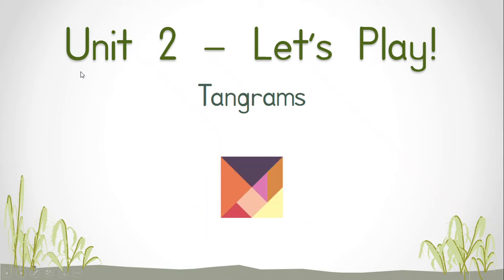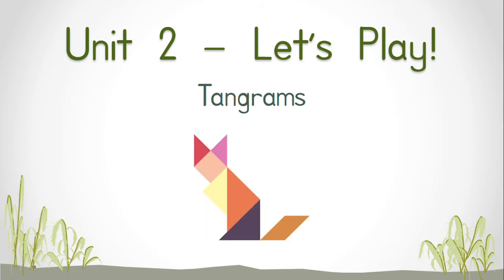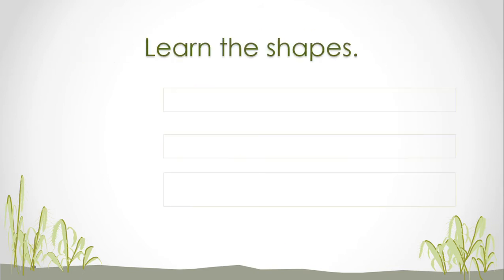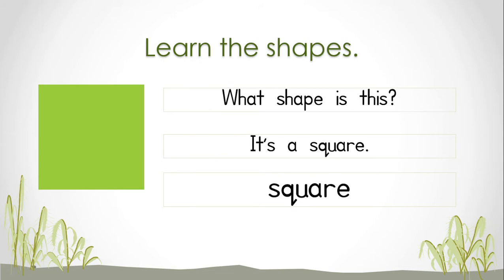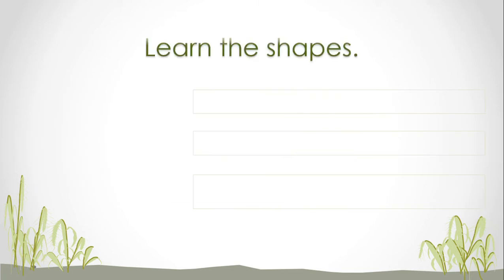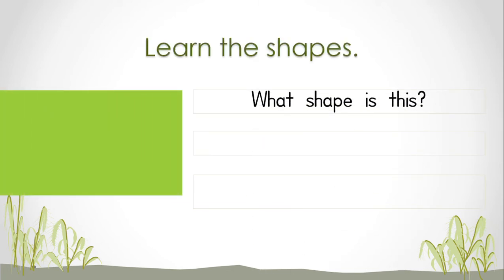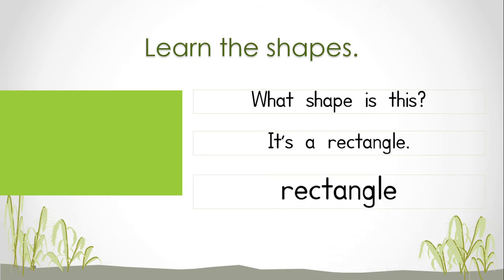Good morning class, today we will be learning about shapes. Let's learn the shapes. What shape is this? It's a square — s-q-u-a-r-e — square. Can you say it? Square. What shape is this? It's a rectangle — r-e-c-t-a-n-g-l-e — rectangle. Can you say it?